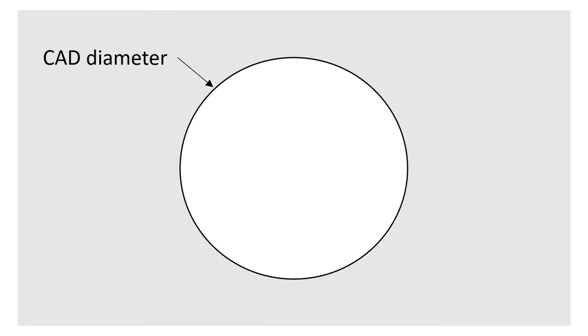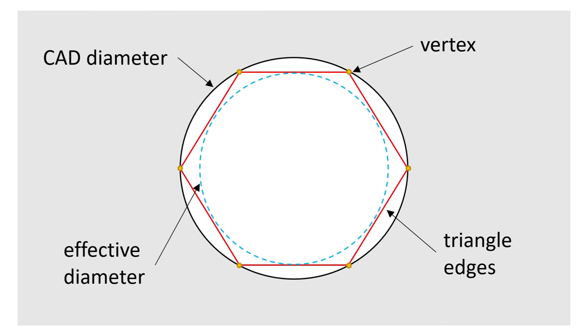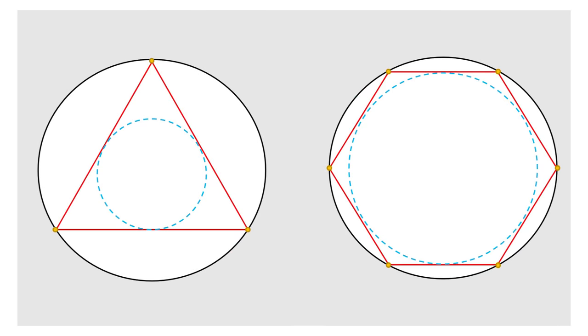During the triangulation of a hole, the points of the triangles are placed on the circumference but the triangles themselves overlap inside which causes shrinking of the inner diameter. The less triangles, the more severe.